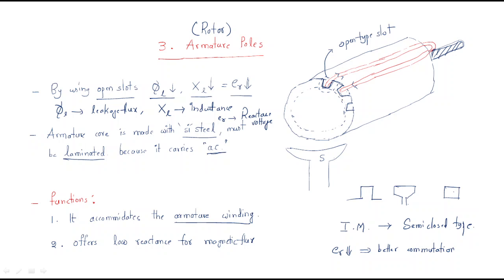Now, the functions of the armature poles: first, it accommodates the armature winding. The slot accommodates the armature winding — this is a function of the slot. Second, it offers low reactance for the magnetic flux, meaning the slot provides low reactance for the magnetic flux.